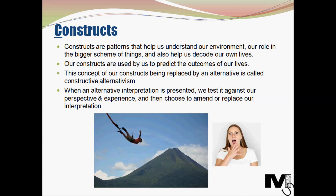This concept of our constructs being replaced by an alternative is called constructive alternativism. But not all alternatives are considered and selected by us. When an alternative interpretation is presented, we weigh it against our existing perspective, test it against our existing perspective and experience, and then choose to amend or replace our existing interpretation — again, we behave like scientists. For example, I tried bungee jumping once a few years ago and after the jump I thought I would do it again. But after I tried other activities like skydiving and paragliding, I felt that bungee jumping is a waste of time because it doesn't last as long as many other experiences. So my perspective was altered because of different experiences.